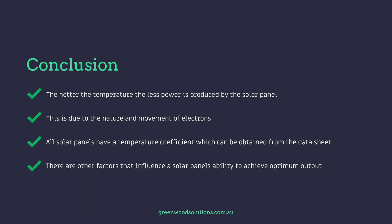Conclusion: the hotter the temperature, the less power is produced by the solar panel. This is due to the nature of movement of electrons. All solar panels have a temperature coefficient which can be obtained from the data sheet. There are other factors that influence the solar panel's ability to achieve optimum output. Thanks so much for watching our presentation on solar panel temperature coefficients. I'm Veli from Greenwood Solutions — if you have any inquiries or questions, feel free to drop us a line and hit that subscription button if you see fit. See you next time.